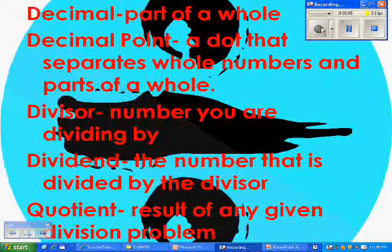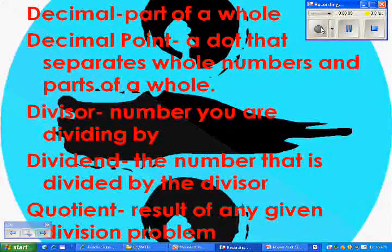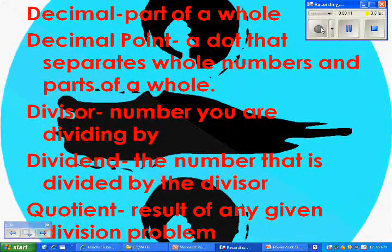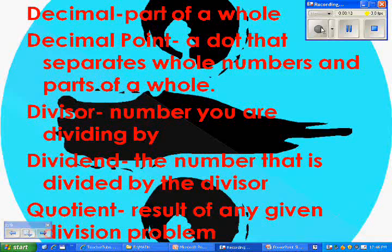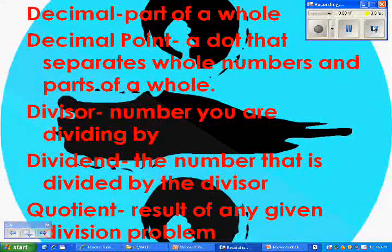A decimal is a part of a whole. A decimal point is a dot that separates whole numbers and parts of a whole. A divisor is a number you are dividing by. The dividend is the number that is divided by the divisor, and the quotient is the result of any given division problem.